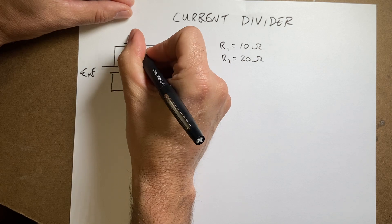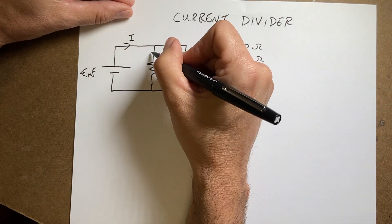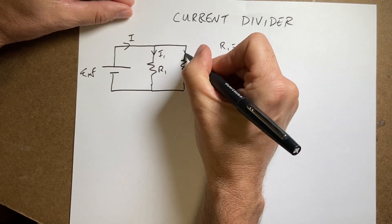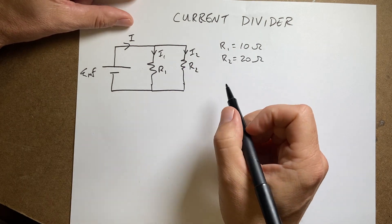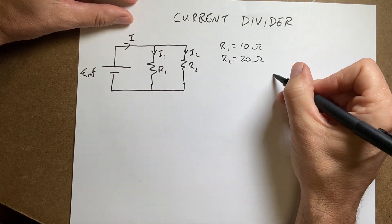So I know here I have a current coming out of the battery, I. Here I have I1, here I have I2. And I actually already showed that in the previous video that this is the same as this.